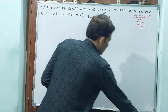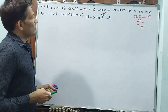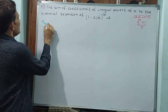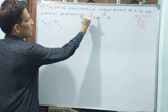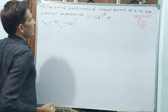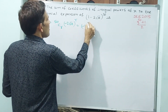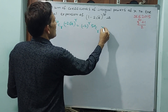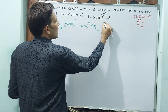Let us find the general term. T(r+1) = 50Cr · (1)^(50−r) · (−2√x)^r, which equals (−2)^r · 50Cr · x^(r/2). The power of x is r/2, and r ranges from 0 to 50.